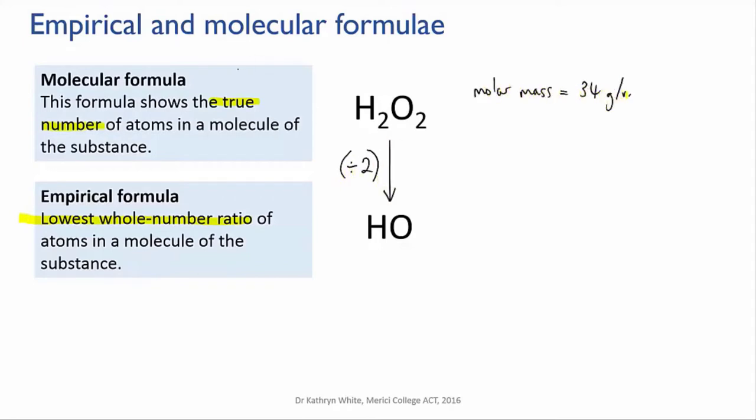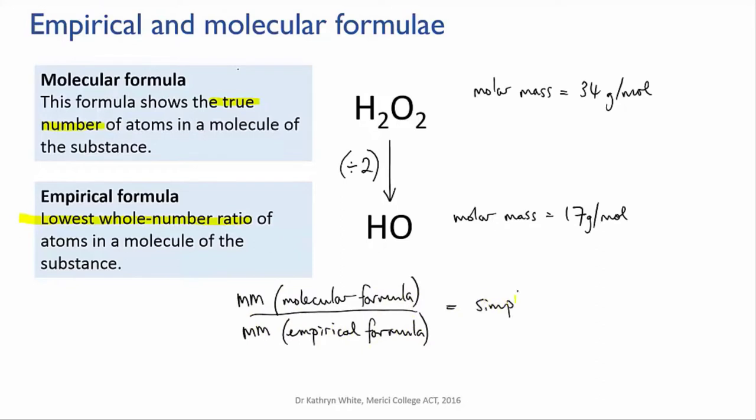This means that the molar mass of the empirical formula is half that of the true molar mass. Hence, if you divide the true molar mass, the molar mass of the molecular formula, by the molar mass of the empirical formula, you'll rediscover the factor that was used to simplify the molecular formula.